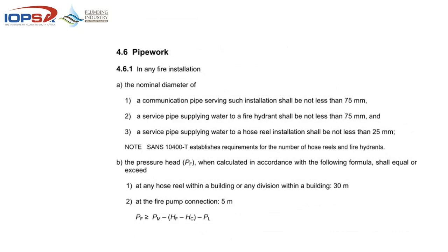For pipework in any fire installation, the nominal diameter of a communication pipe serving that installation shall not be less than 75mm. The service pipe supplying water to a hydrant shall not be less than 75mm, and the service pipe supplying water to a hose reel installation shall not be less than 25mm. Referring back to SANS 10252 Part 1, the 75mm is a given — any communication pipe shall not be less than 75mm, and if it exceeds 50 meters it shall be upsized to 110mm. If it's more, a ring main must be installed.